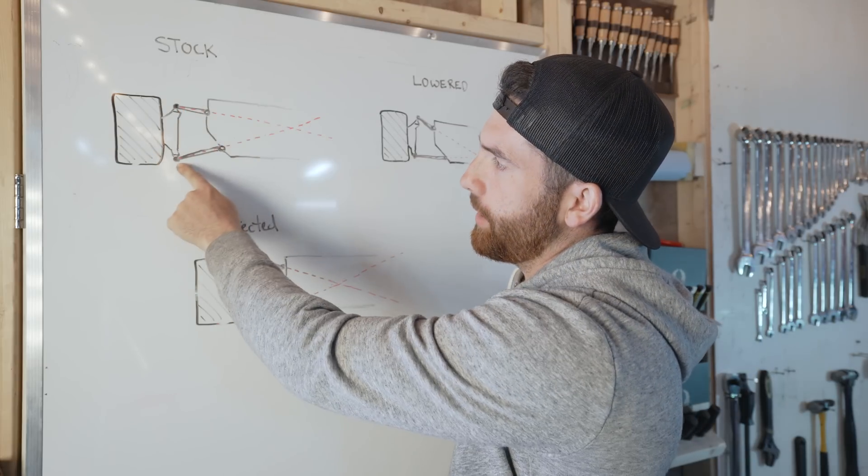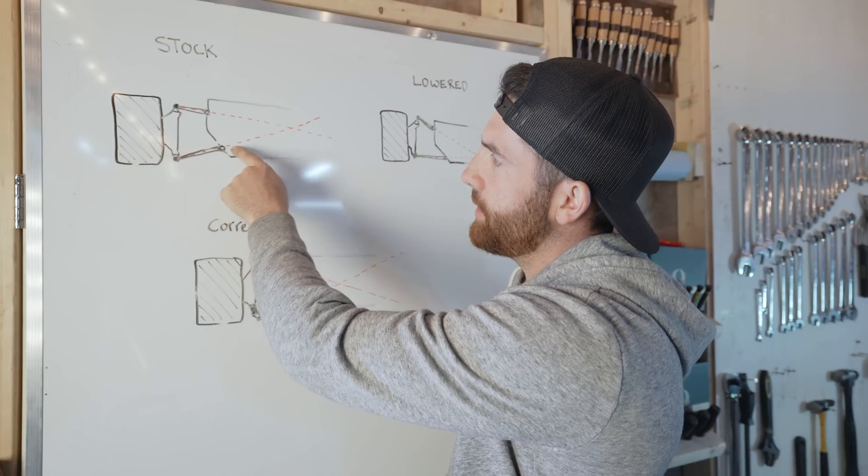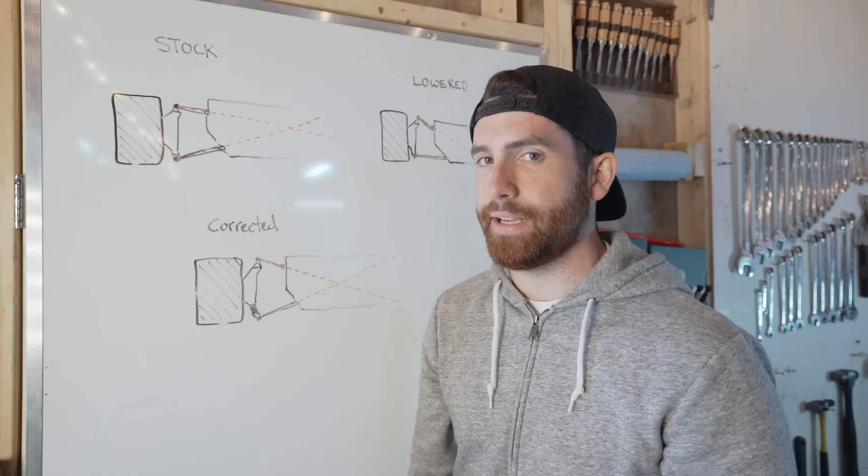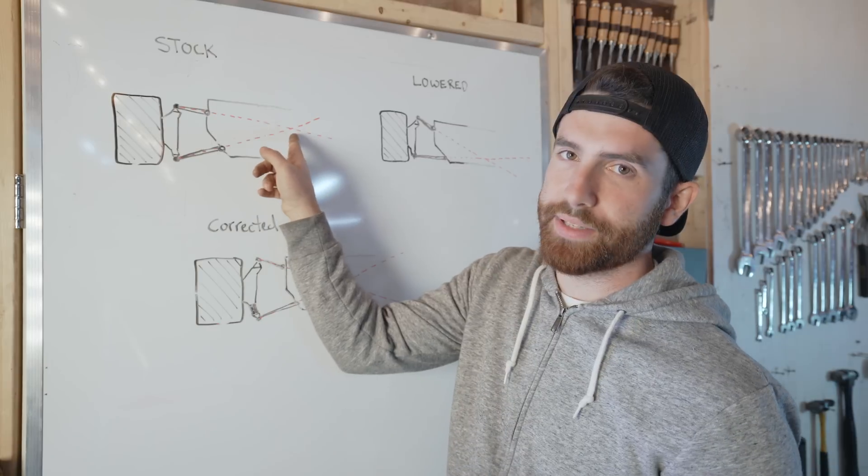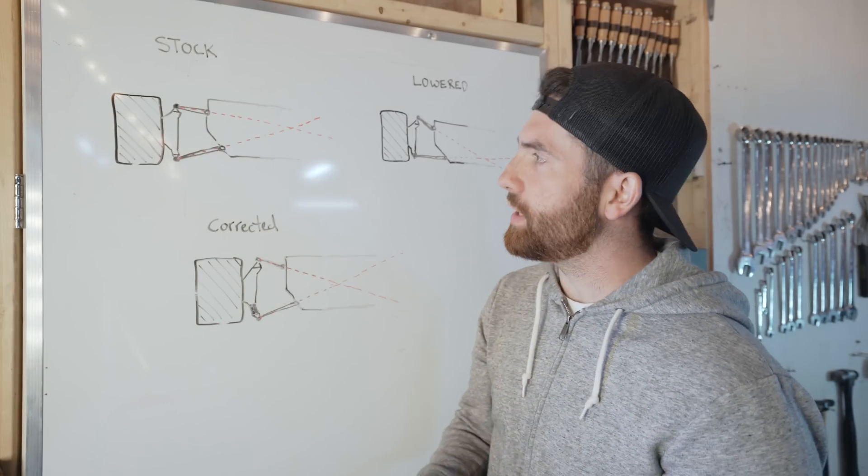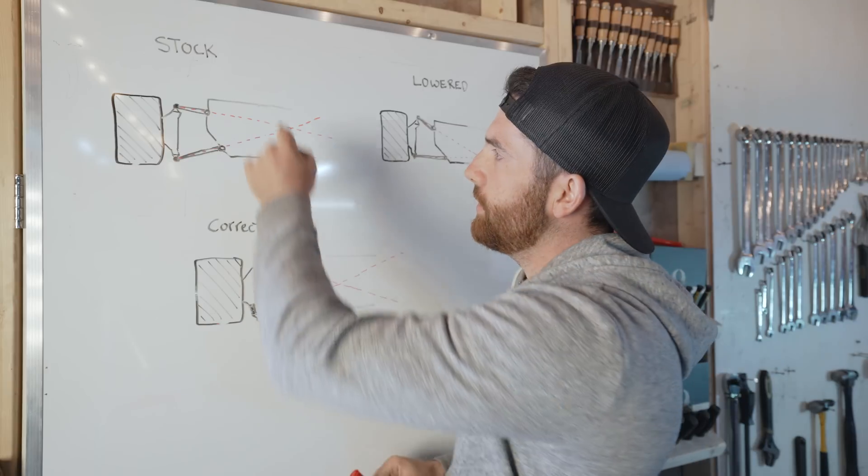So you can see here I drew a line here, and I drew a line here between the lower ball joint and the bushing. And you see right here, this is called the instantaneous center, where these two points meet.